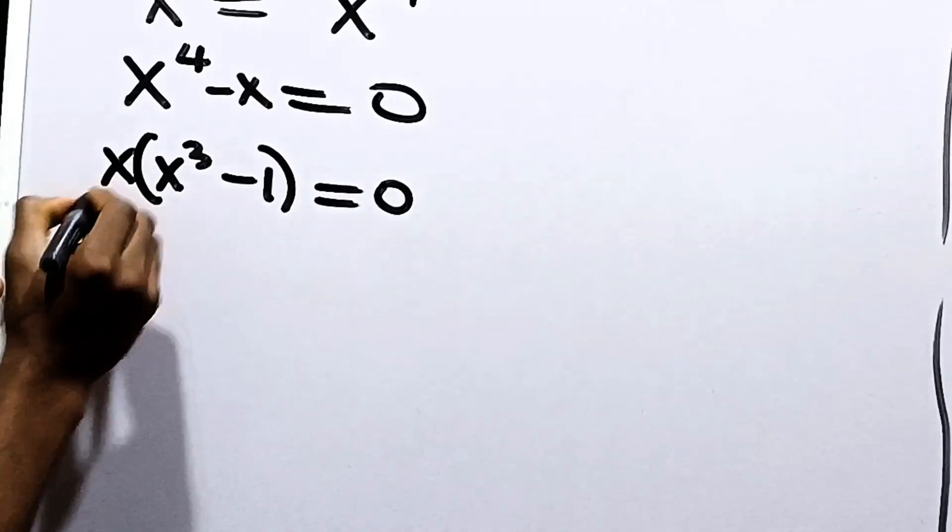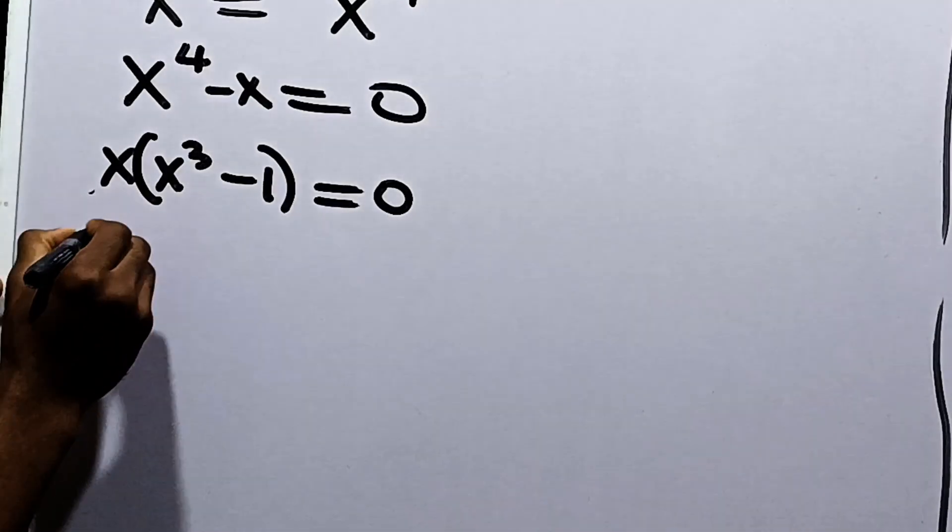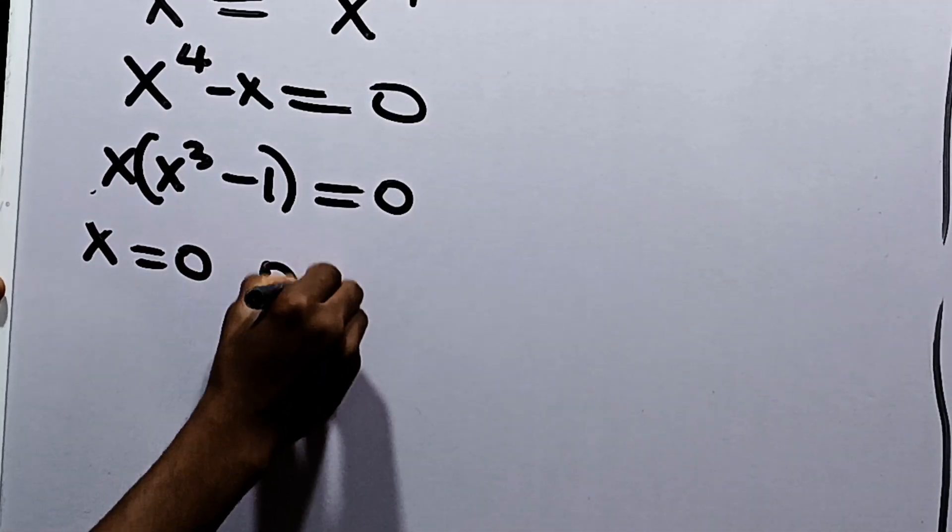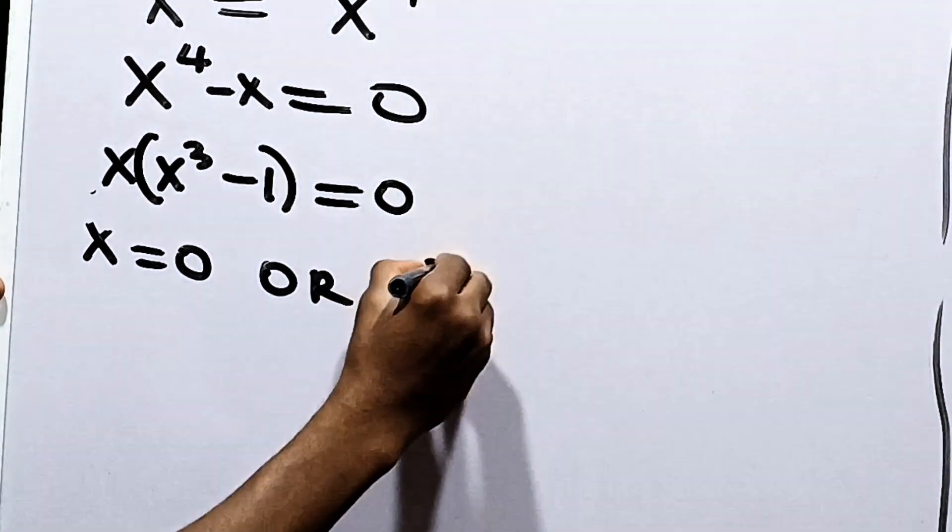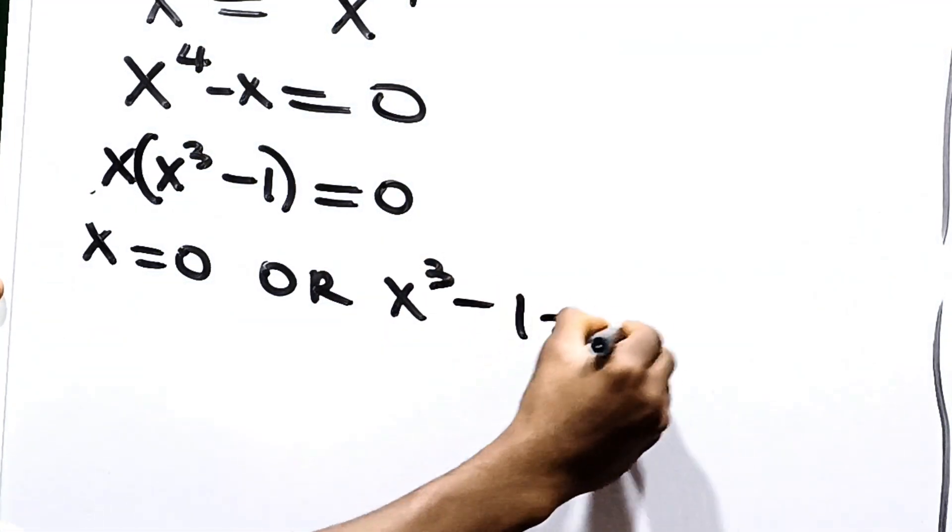So from here, either the first one is equal to 0, which is x is equal to 0, or x cubed minus 1 is equal to 0.